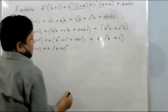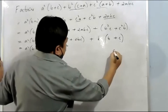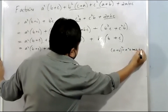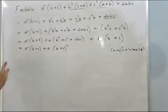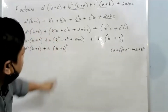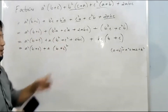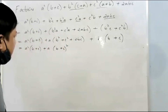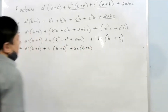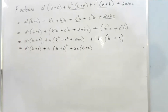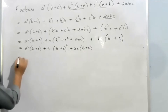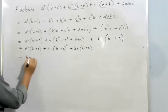Now let's take out the common factor. As we can see, (b + c) appears three times, so (b + c) is common throughout. Let's take it out.